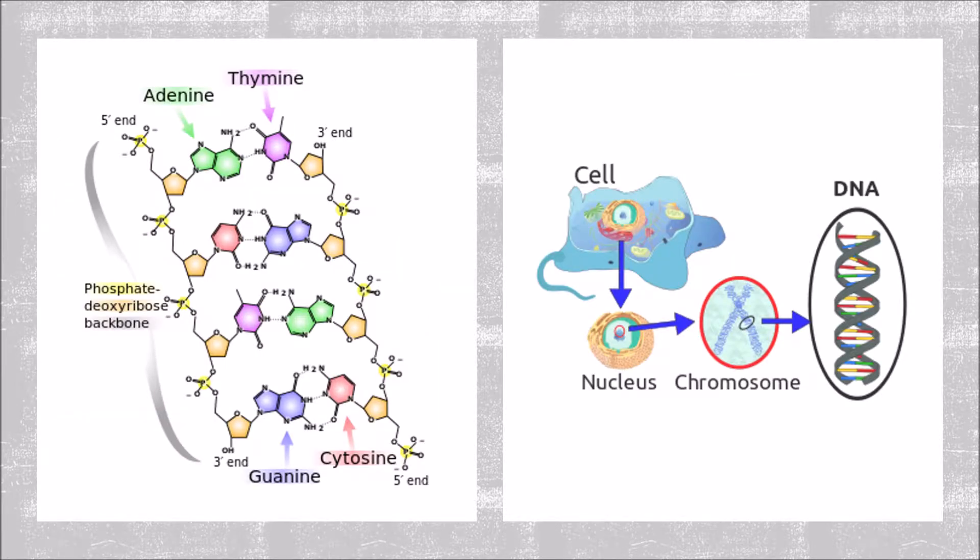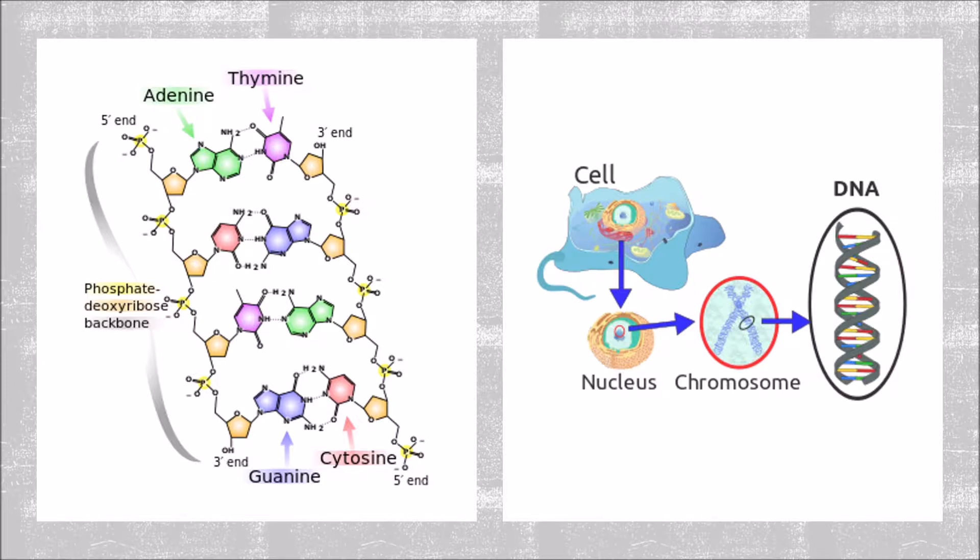Each cell contains instructions in a molecule known as deoxyribonucleic acid, or DNA for short. DNA is made of four different building blocks, known as nucleotides. These nucleotides encode for the function of each cell and act as an instruction manual for your body.